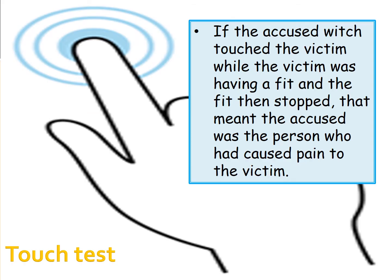The touch test was also another way. If the accused witch touched the victim while the victim was having a fit and the fit then stopped, that meant the accused person was the one who had caused the pain to the victim. So if someone was having a fit and the accused witch touched them and they stopped, people believed that must have meant you were causing the fit in the first place — and so you were obviously a witch.